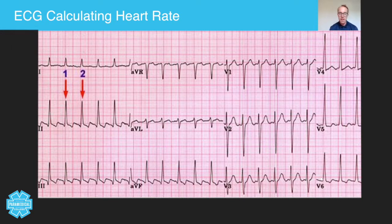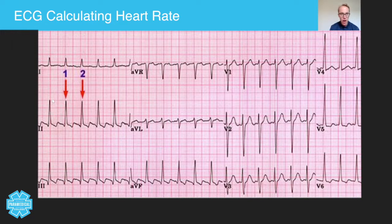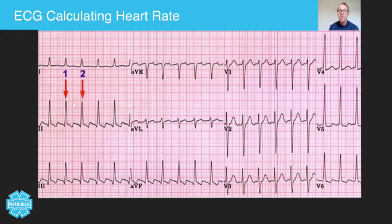Now it doesn't actually matter which view you take this from, but it's just easier to take it from lead two. What you do is find your R-wave, then find another R-wave, and have a look to see how many large squares there are in between those R-waves. You take the number of large boxes and divide it into 300. So 300 divided by — on this occasion — two, and this heart rate is 150. Always try and use an R-wave that is on the thick line; if you use one in between the lines it's going to be more complex. So 300 divided by two — that works every time.